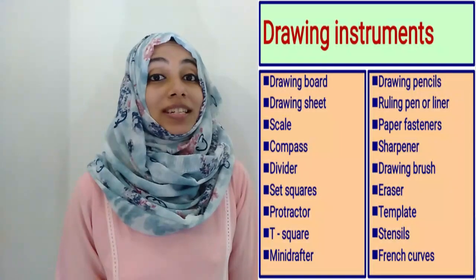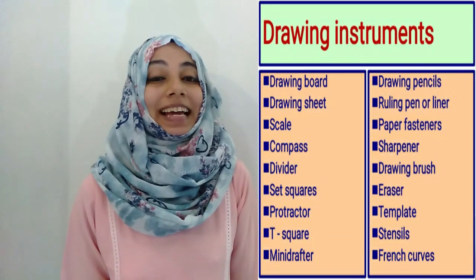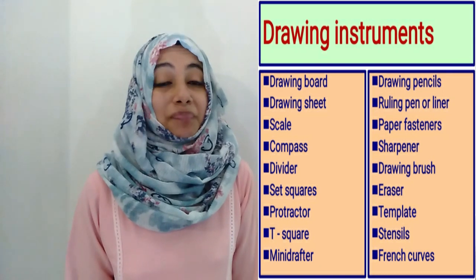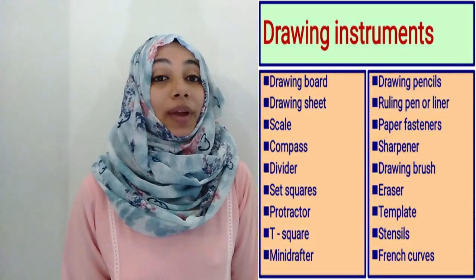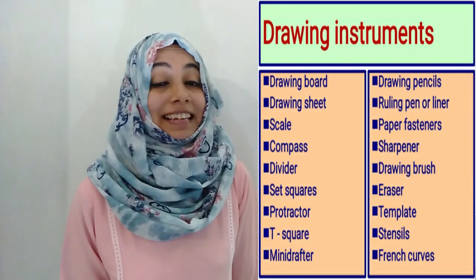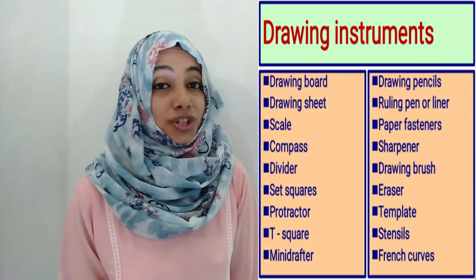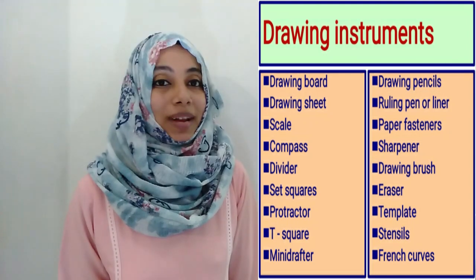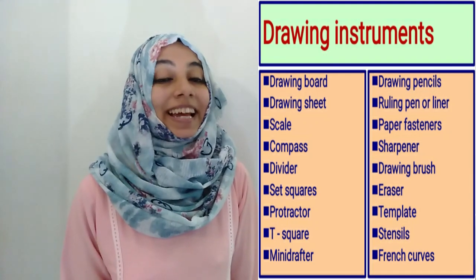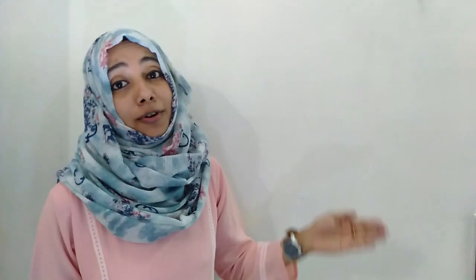For drawing purposes, we have to use various instruments. Those are listed here: drawing board, drawing sheet, scale, compass, divider, set squares, protractor, T-square, mini drafter, and other accessories like drawing pencils, rolling pen or liner, fasteners, sharpener, eraser, drawing brush, template, stencils, and finally French curves. So, we can go through what each of those is.